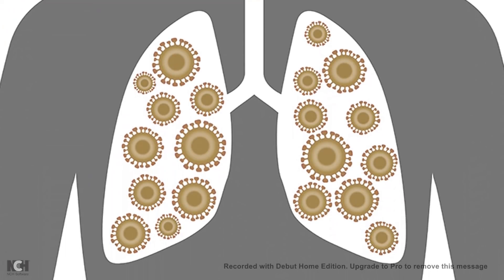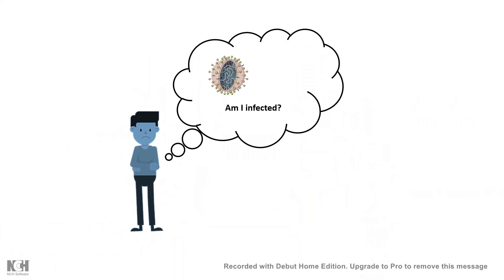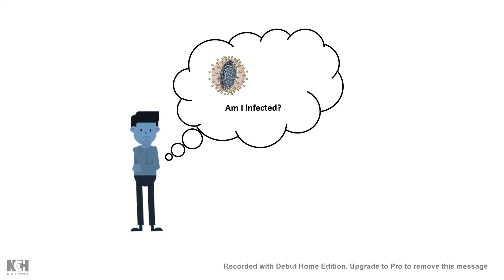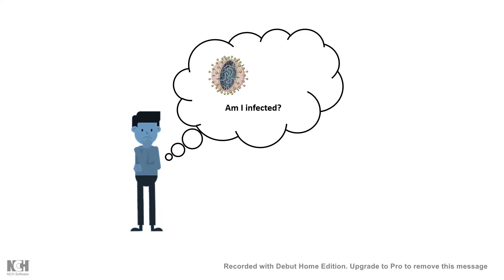We know that coronavirus mainly affects your upper respiratory tract and lungs, causing pneumonia, which is a key symptom in coronavirus infection. But how would you know that you are infected or not? Let's say you have a common cold versus coronavirus — how would you delineate between the two? Is there any confirmatory test you can do, or if you are having symptoms like a common cold, what can you possibly do?